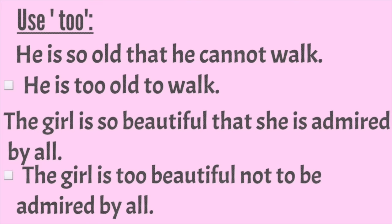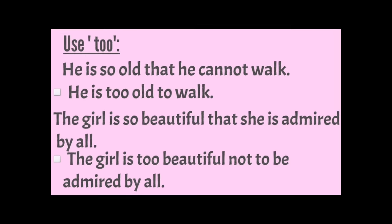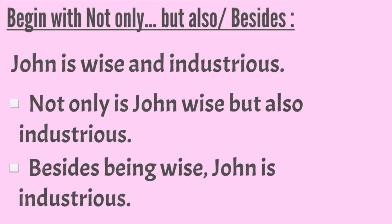Use 'too...to': 'He is so old that he cannot walk' becomes 'He is too old to walk.' For the sentence 'The girl is so beautiful that she is admired by all', it becomes 'The girl is too beautiful not to be admired by all.' 'Too' is a negative word, so be careful: when the original sentence is affirmative, you must add 'not' to keep the meaning intact.